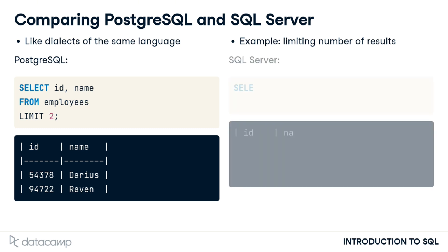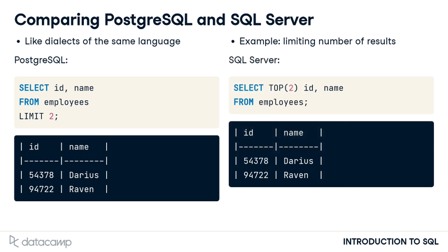The exact same results are achieved in SQL Server using the TOP keyword instead of LIMIT. Notice that this keyword is the only difference between the two queries. Limiting results is useful when testing code since many result sets can have thousands of results. It's best to write and test code using just a few results before removing the limit for the final query.